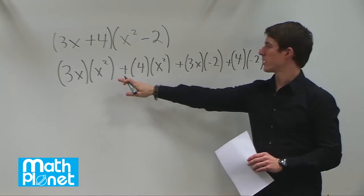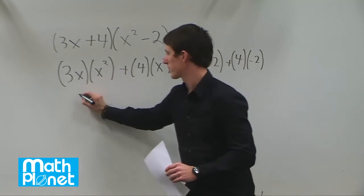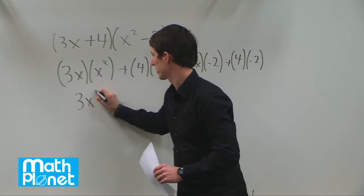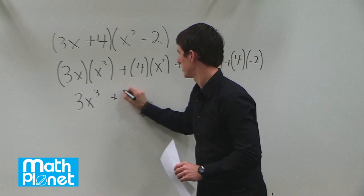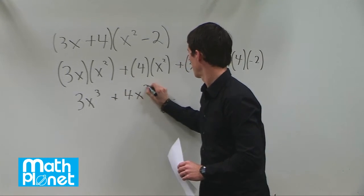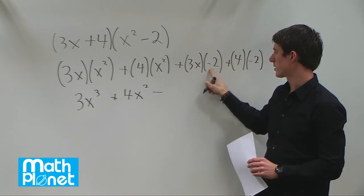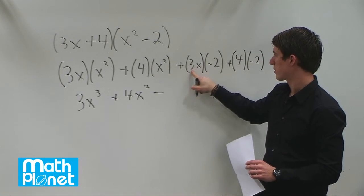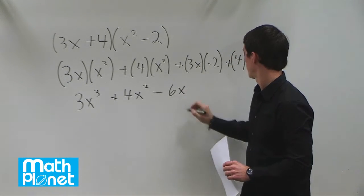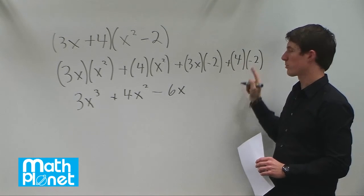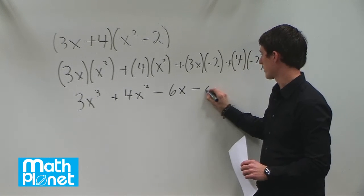Now we can multiply each of these out and simplify. 3x times x squared gives us 3x cubed. 4x times x gives us 4x squared. 3x times negative 2 gives us negative 6x — since there's a negative, we multiply the like terms: 3 times 2 is 6, leaving a factor of x. Finally, we have two numbers: 4 times negative 2, giving us minus 8.